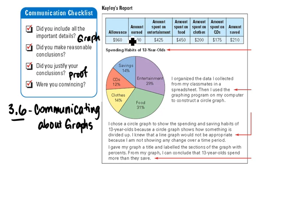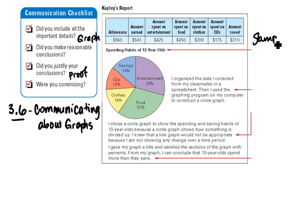In Kaylee's report, she looked at whether or not she needs an increase in her allowance. She surveyed 10 of her classmates and reported the amounts of how much they spent. She used a spreadsheet and a graph to present her findings, then asked Karina to comment on it. She asked 10 people with a total allowance of $960, but she never mentions the sample size.